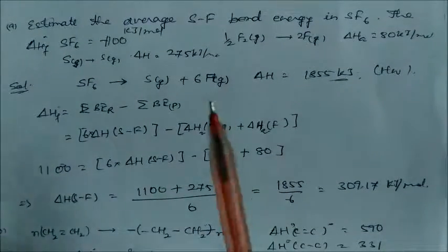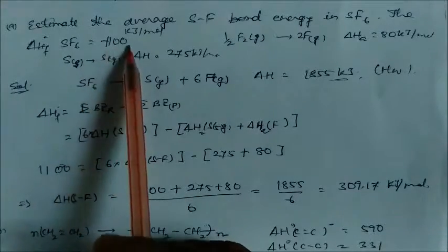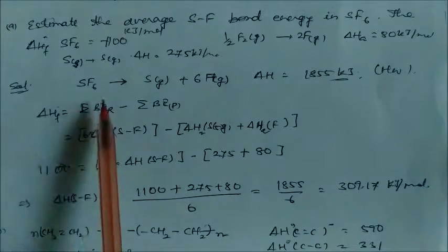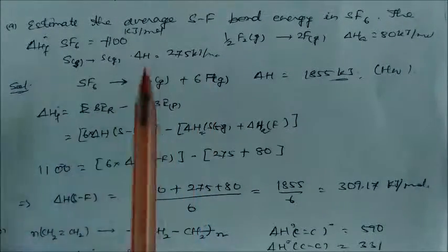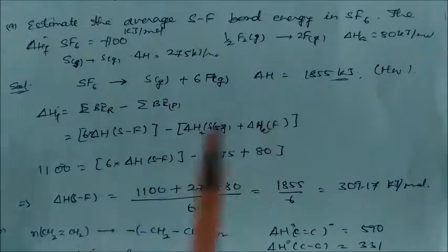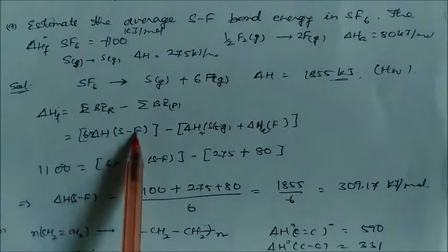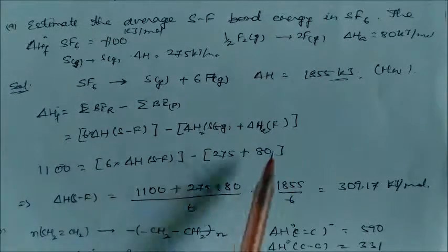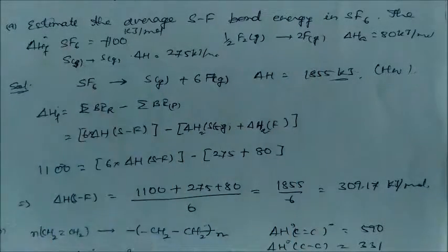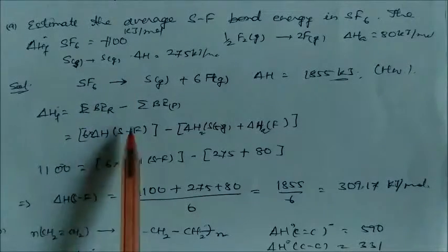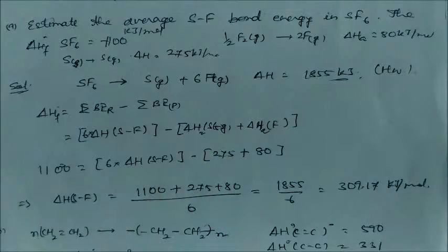To estimate S–F bond energy in SF₆: given heat of formation of SF₆ = −1100 kJ/mol, heat of atomization of fluorine = 80 kJ/mol per atom, heat of sublimation of sulfur = 275 kJ/mol. SF₆(g) → S(g) + 6F(g) with atomization enthalpy 1855 kJ/mol. Using ΔH(formation) = reactants − products: 1100 + 275 + 6×80 = 6 × ΔH(S–F). Solving gives S–F bond enthalpy.